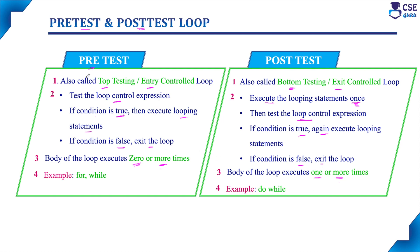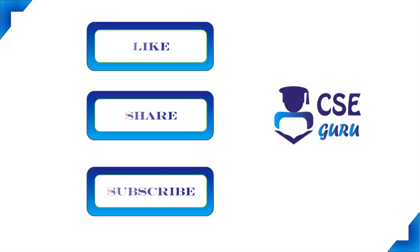Examples of pre-test loops are the for loop and the while loop. An example of a post-test loop is the do-while loop. This completes the comparison between pre-test and post-test loops. Thank you for watching.